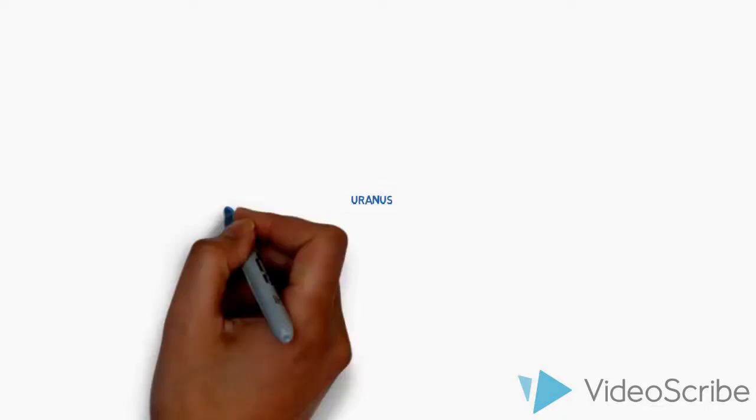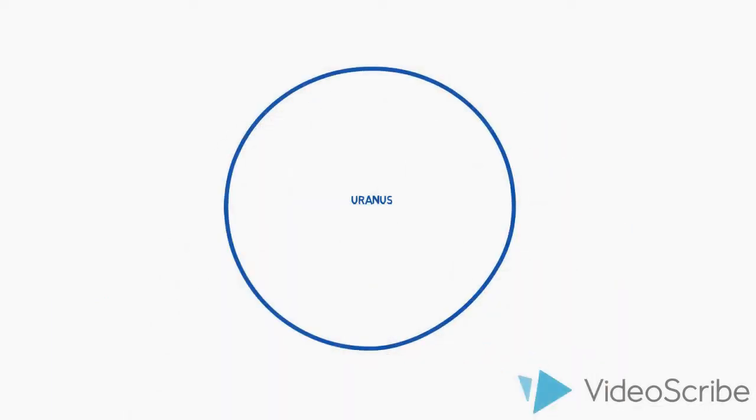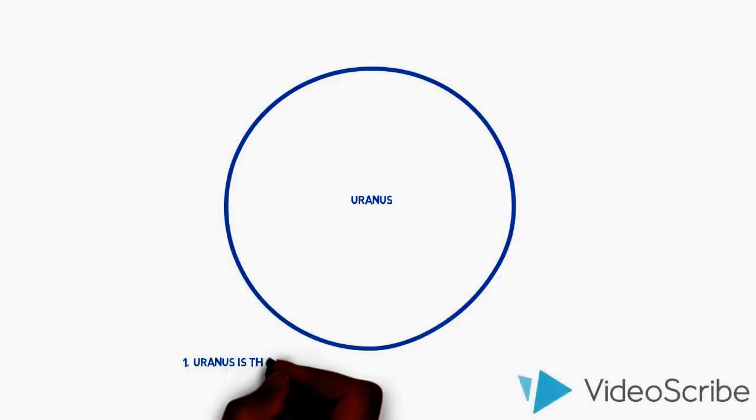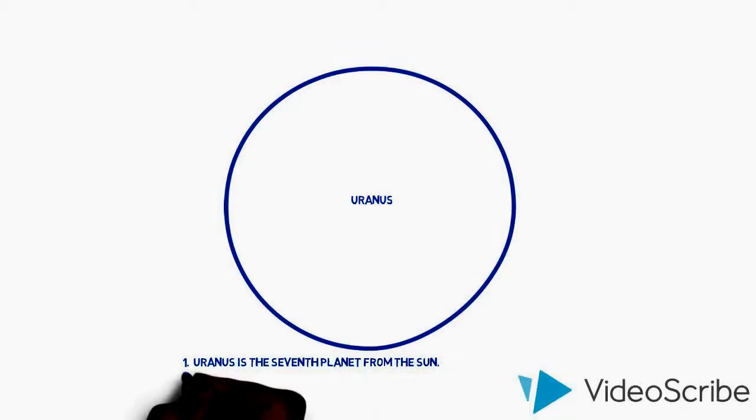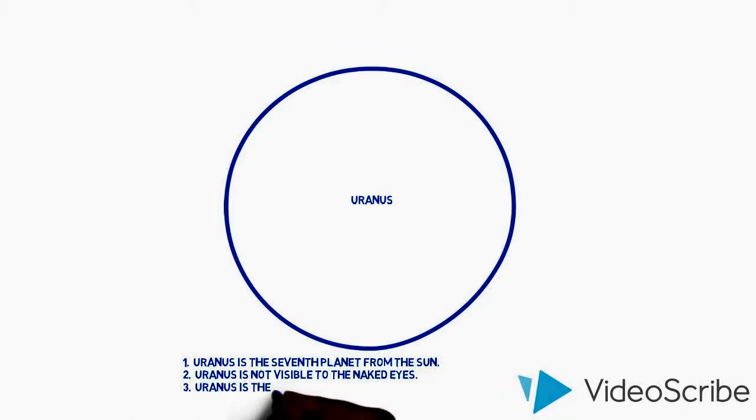Uranus. Uranus is the seventh planet from the Sun. Uranus is not visible to the naked eyes. Uranus is the planet discovered with the use of a telescope.